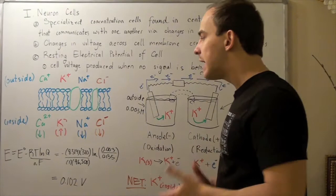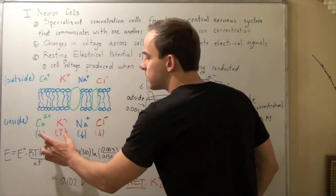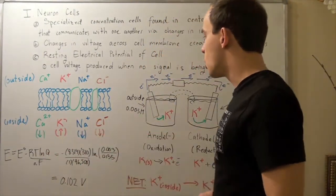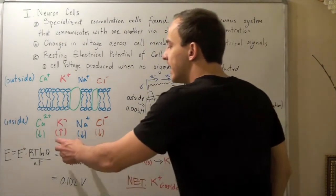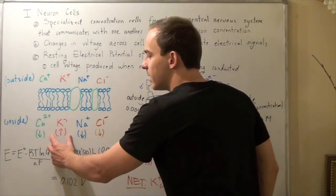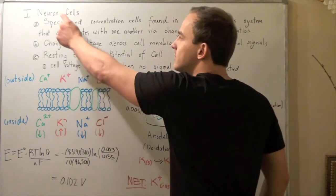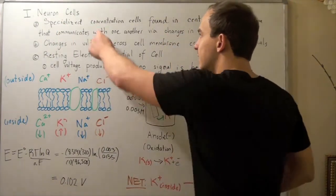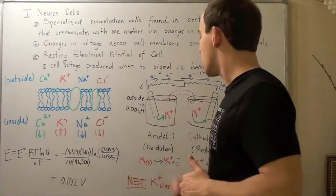Now, today, to save time, I'm only going to show you for this potassium ion. You can do these on your own. Let's take this potassium ion and let's create a concentration cell or a specialized concentration cell called a neuron cell.